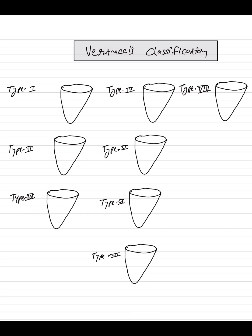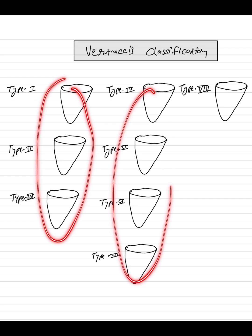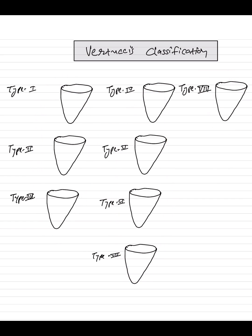Vertucci classified the root canal system into eight types. For the sake of remembering, we can group them into three. The first group is types one, two, and three. All of them have a single exit.